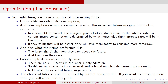Consumption decisions are made based on the expected future marginal product of capital. In a competitive market, the marginal product of capital equals the interest rate. So current and future consumption is determined by what households think interest rates will be in the future. If they think rates will be higher, they'll save more today to consume more tomorrow. Labor supply is determined each period based on the current wage rate — high wages mean you want to work more; low wages mean you want to work less.